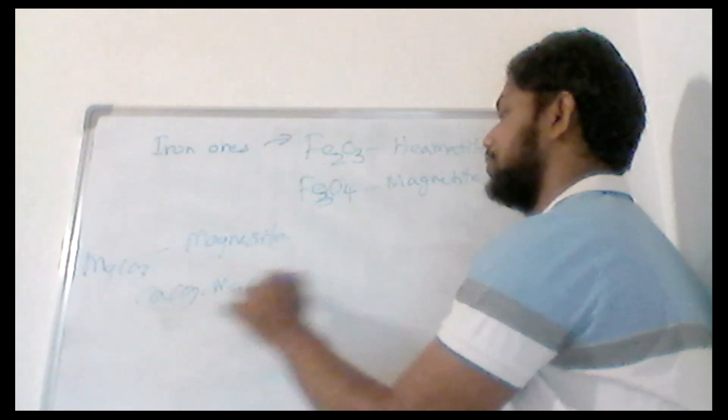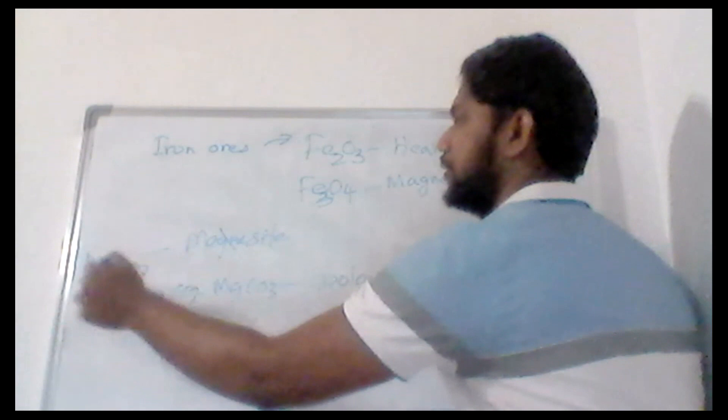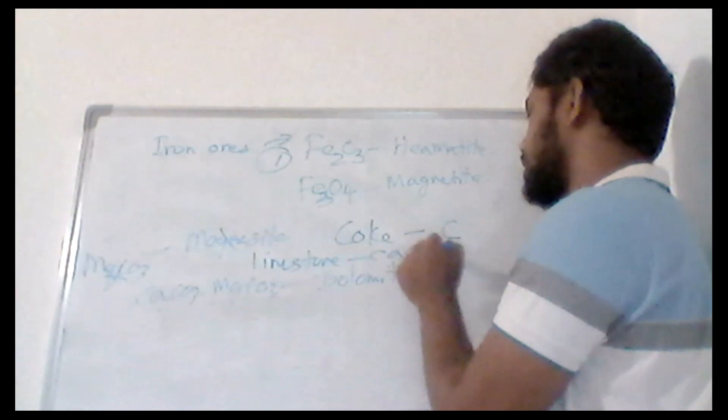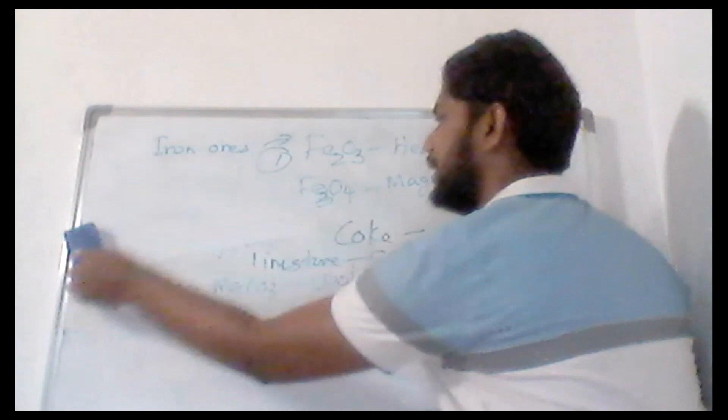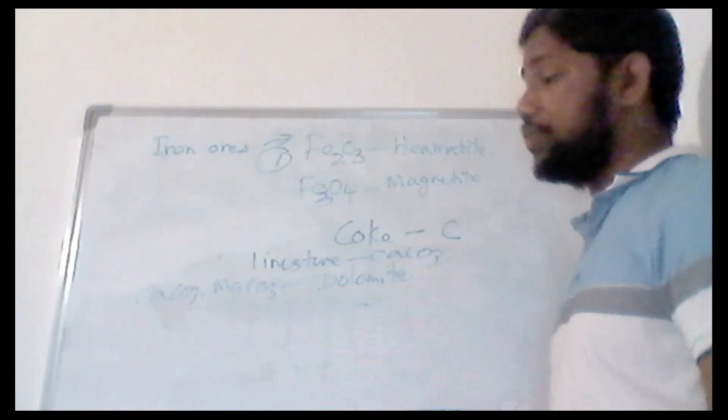Hematite is Fe₂O₃ and magnetite is Fe₃O₄. Remember, magnesite is MgCO₃ — if you have CaMg(CO₃)₂ it is called dolomite, and if you have only MgCO₃ it is called magnesite. The raw materials for iron extraction are three: first the iron ore (the main one), second coke (carbon), and third limestone or dolomite.